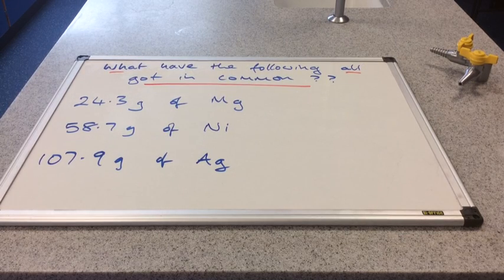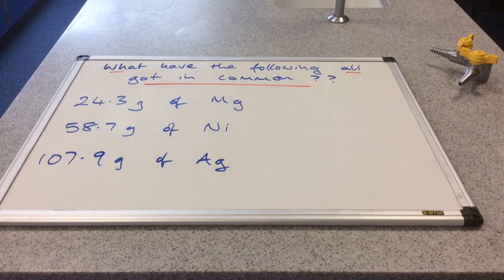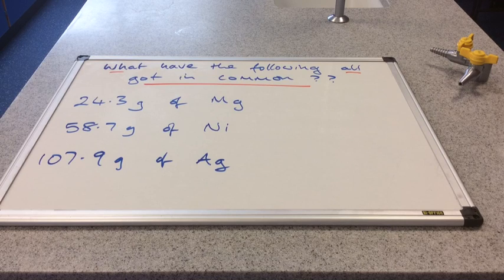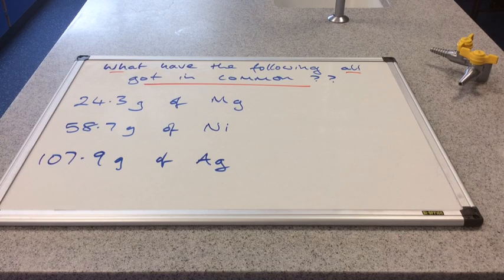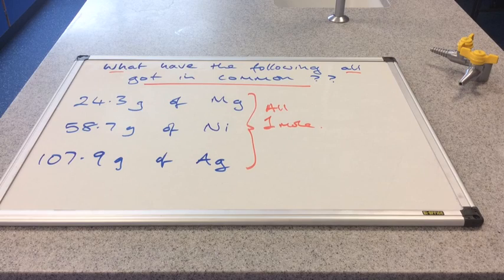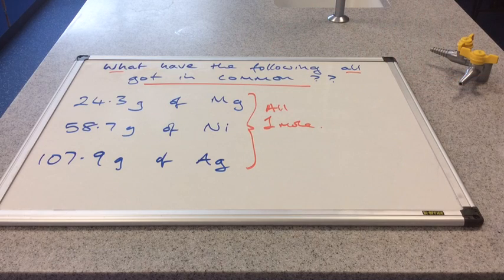If we just have a think about the information on the board now, what have the following all got in common? So we've got 24.3 grams of magnesium, 58.7 grams of nickel and 107.9 grams of silver. I'll give you a clue. You need to be looking at the periodic table. Hopefully you've all realized that we've got one mole of each of these substances. So because these are all one mole of the substances, we can also say how many particles are present, and by particles we're talking about atoms here. So the particles are the atoms involved.